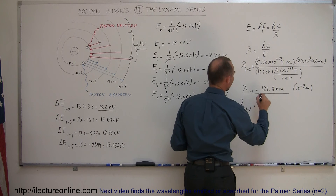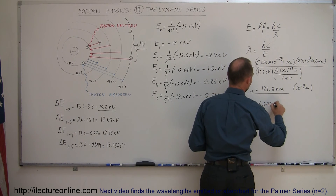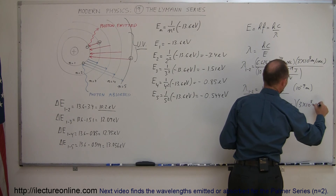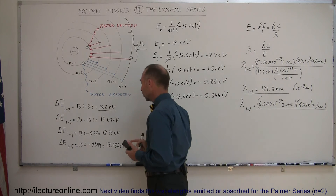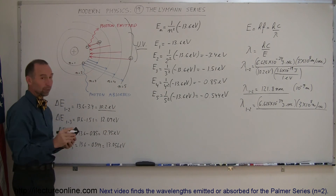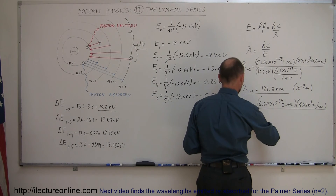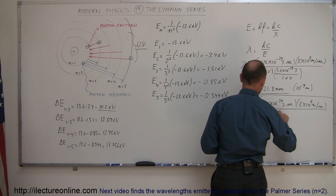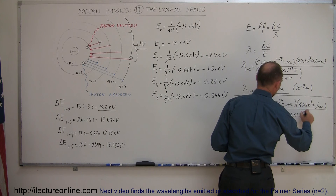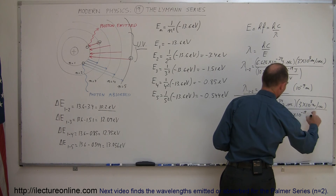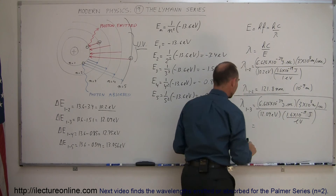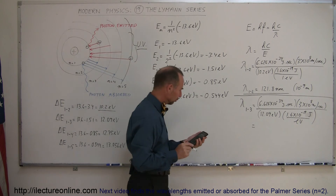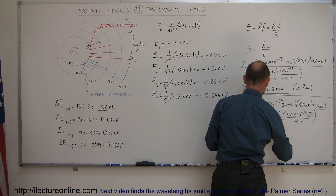For lambda from level 1 to 3, using the same formula — 6.626 times 10 to the minus 34 joule-seconds times 3 times 10 to the 8 meters per second — divided by 12.09 electron volts and converted using 1.6 times 10 to the minus 19 joules per electron volt, we get a wavelength of 102.8 nanometers for the jump from orbit 3 down to orbit 1.